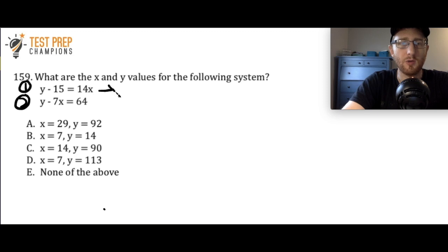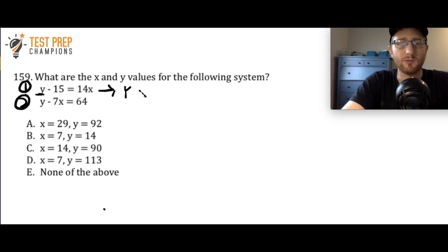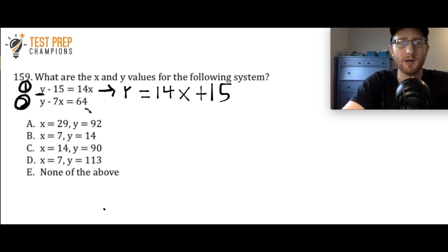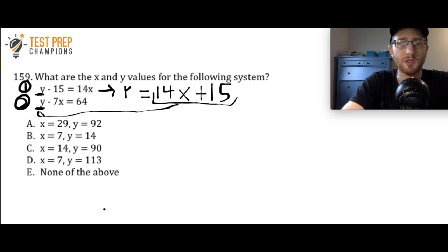Solving for y means getting y by itself on the left-hand side of the equation — everything to the left of the equal sign. Since I have y minus 15, if I add 15 to both sides, the 15s cancel out and I'm left with y equals 14x plus 15. So step one: I picked equation 1 and solved for y. Now I'm going to come down to equation 2 and plug 14x plus 15 in for y.